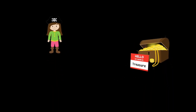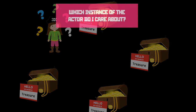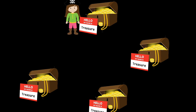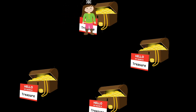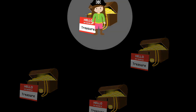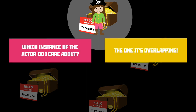However, now there's another problem. When we've got more than one object of the same type to interact with — in this case lots of treasure — how does the pirate know which instance of the actor to care about? In other words, which treasure has it currently collided with? We need to tell the program that the treasure we care about is the one that our pirate happens to be overlapping.